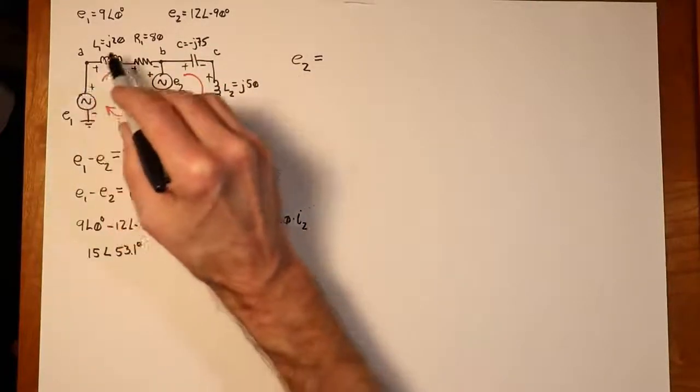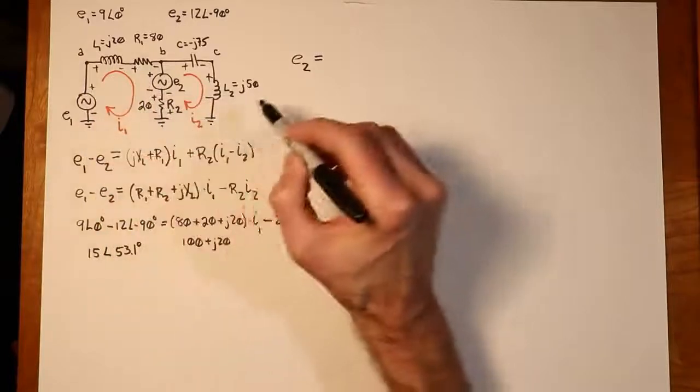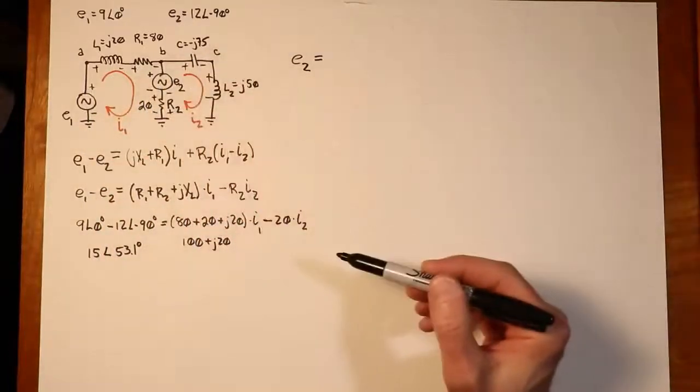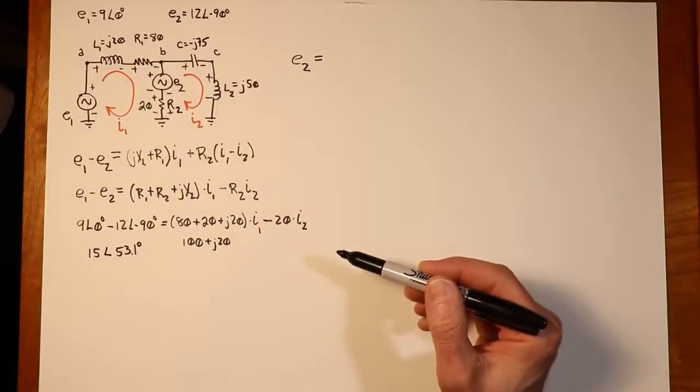So in the I1 loop, the current's going into the plus, out of the minus. In the I2 loop, it's going into the minus and then out of the plus. And that makes all the difference in the world.